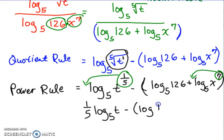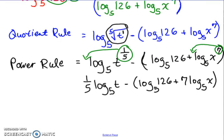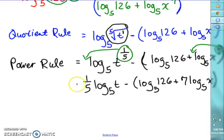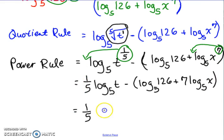The last step is moving all exponents to the front of each log. The 1/5 goes directly in front of its log term, and the 7 moves in front of its log term. We follow the same process each time — the 7 is an exponent so it moves in front. For log base 5 of 126, since it's all numbers, we can put that into the calculator as log(126) divided by log(5).